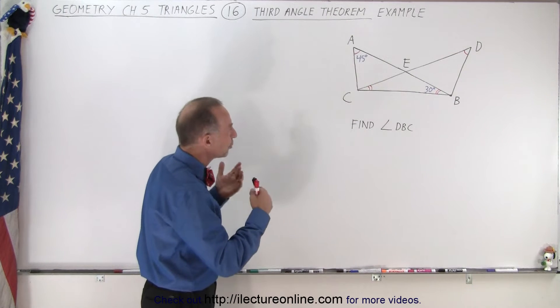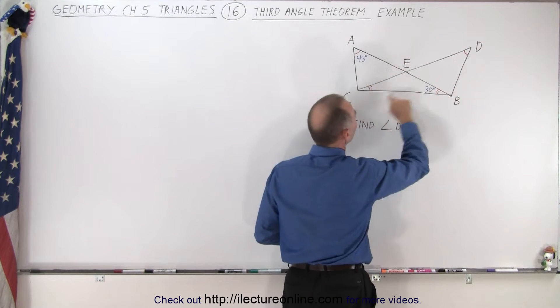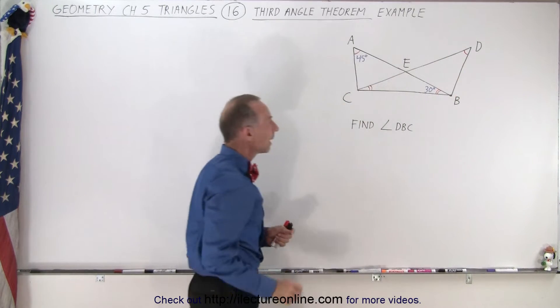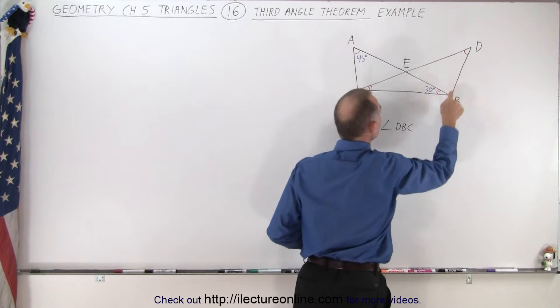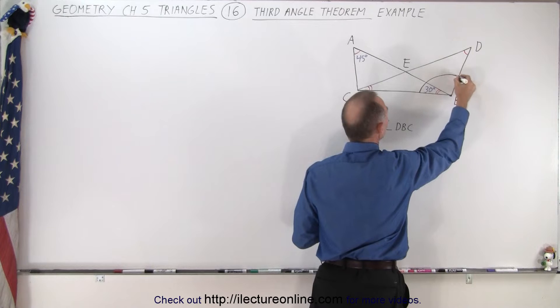Here we have two triangles: triangle ABC and triangle DBC. What we're trying to find is the angle DBC. In other words, we're trying to find this complete angle right here.